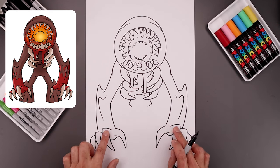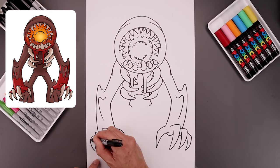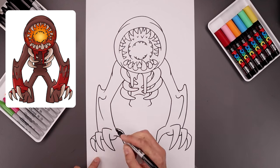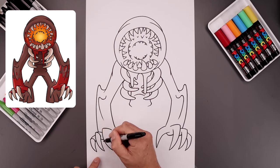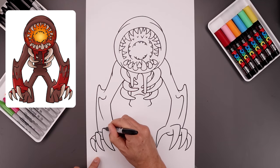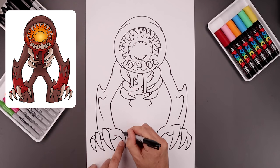Now we're going to go back and separate the tip of each claw. From the knuckle, up and then down towards the inside of the finger. And then we'll separate the thumb.